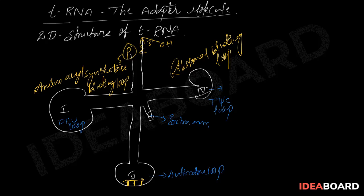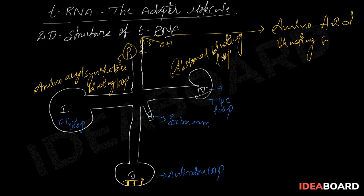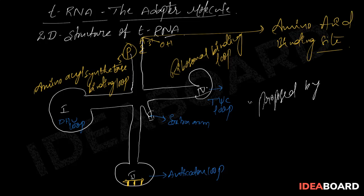This is what we can call the amino acid binding site. This 2D structure of tRNA is also known as the cloverleaf model.